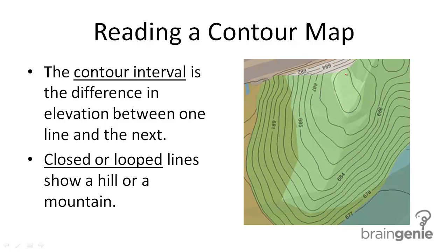The contour interval is the difference between one line and the next. So here, this line represents 685, whereas the line below it represented 684. So our contour interval — the difference between these — is 1.